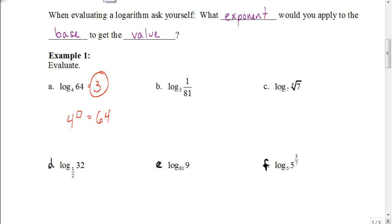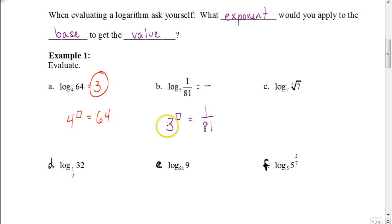The next one looks a bit weird, but always ask yourself the same question: what exponent would we apply to base 3 to get a value of 1 over 81? A negative exponent would turn it into a fraction. The negative exponent makes it into 1 over 3, and since 3 to the 4th power is 81, then 3 to the negative 4th power is 1 over 81. So the answer is negative 4.